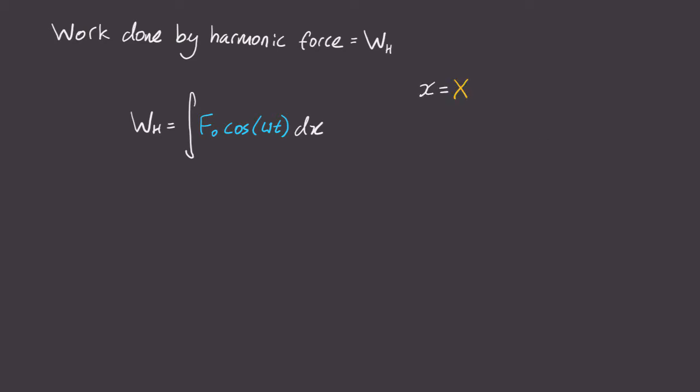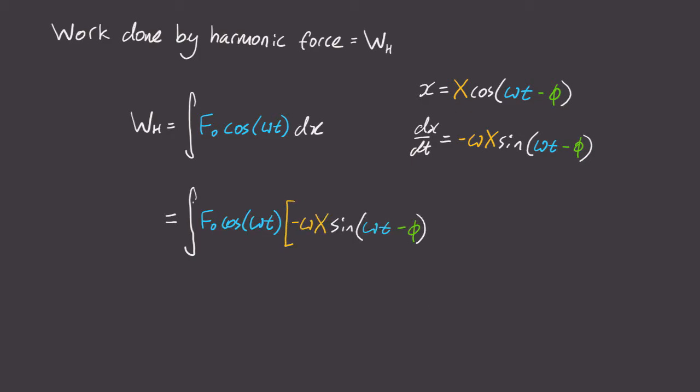To integrate this, remember that our long-term equation of motion is just x equals capital X cosine omega t minus phi. Let's differentiate this to get dx dt. Now let's sub out dx to change our variable of integration to time.